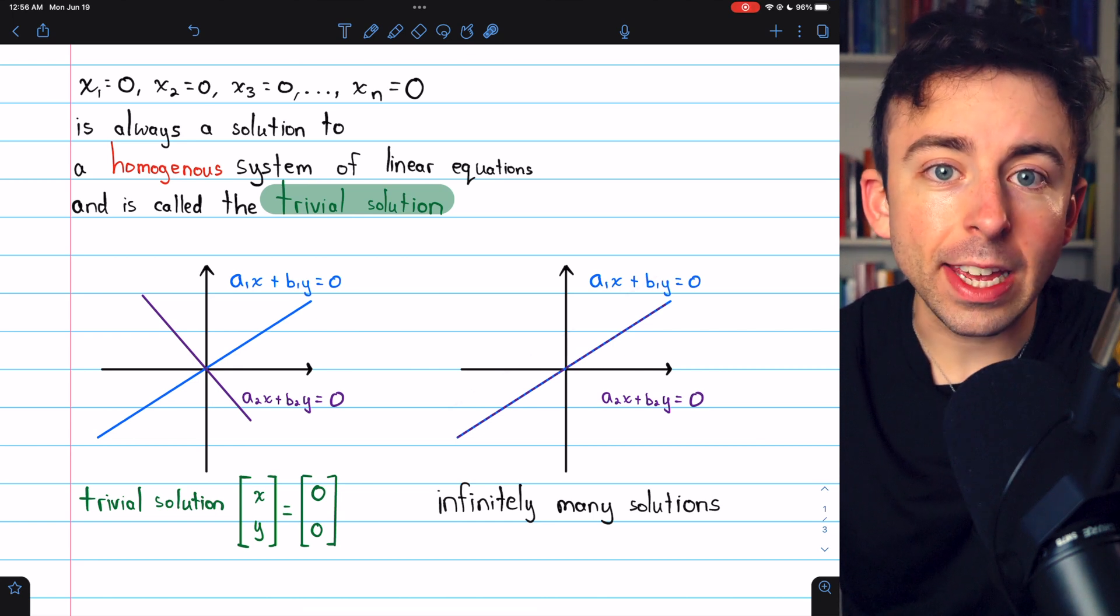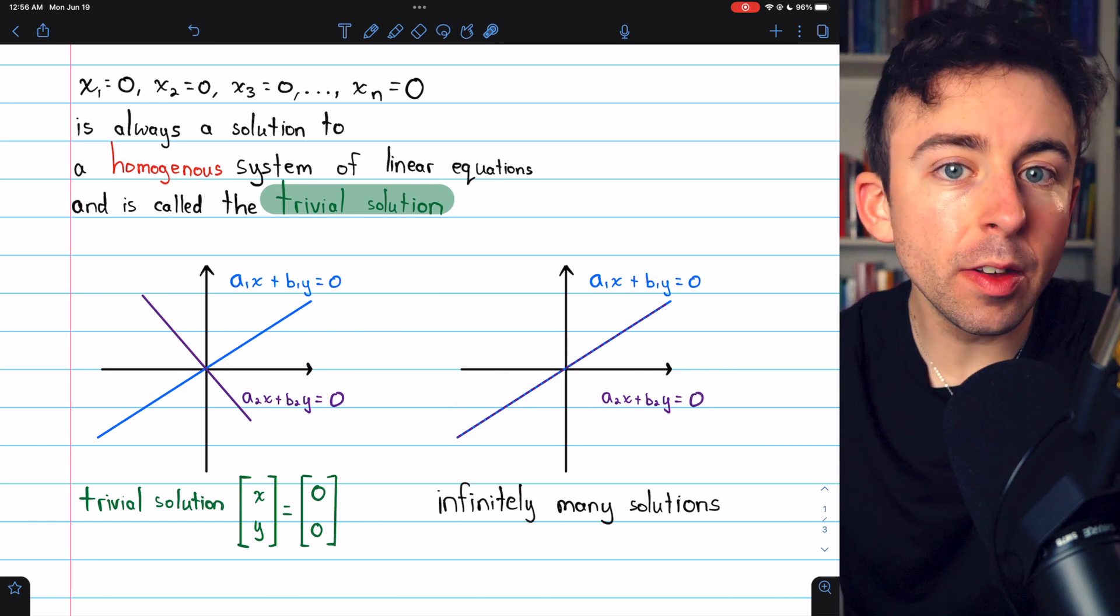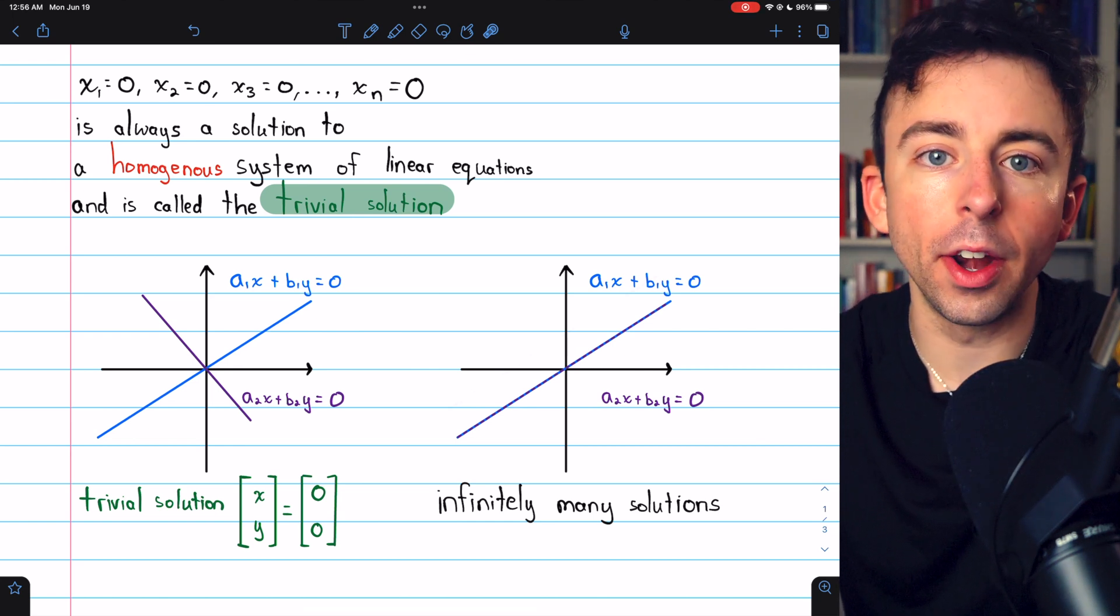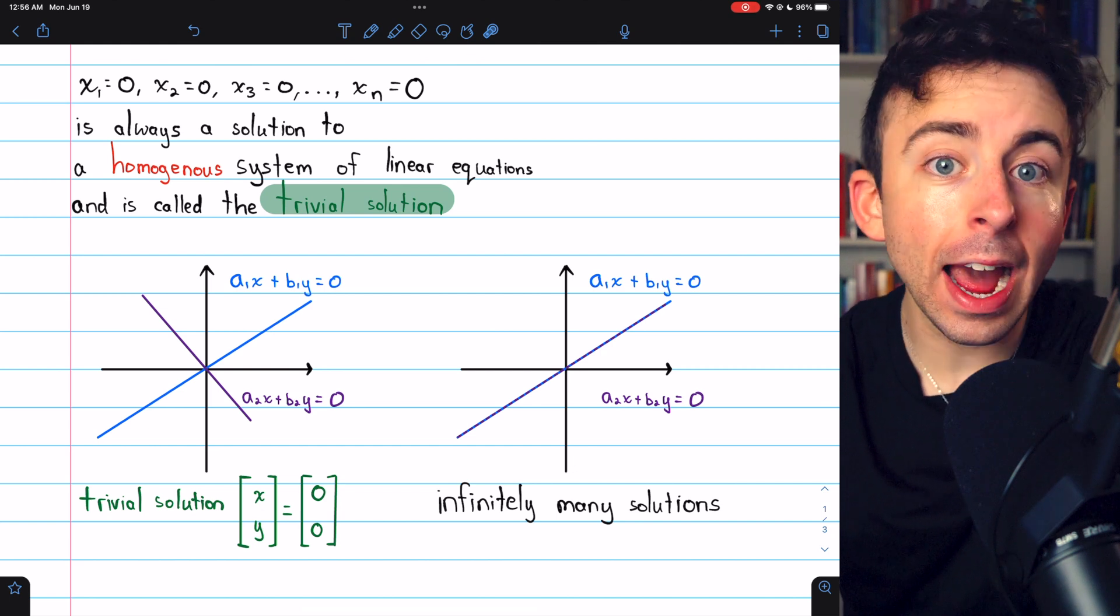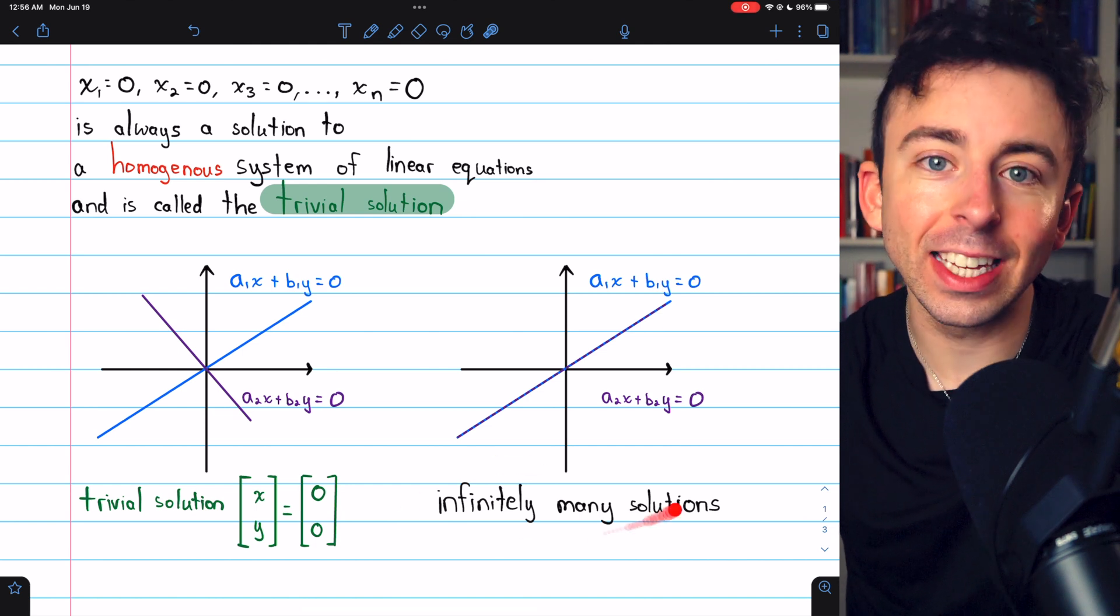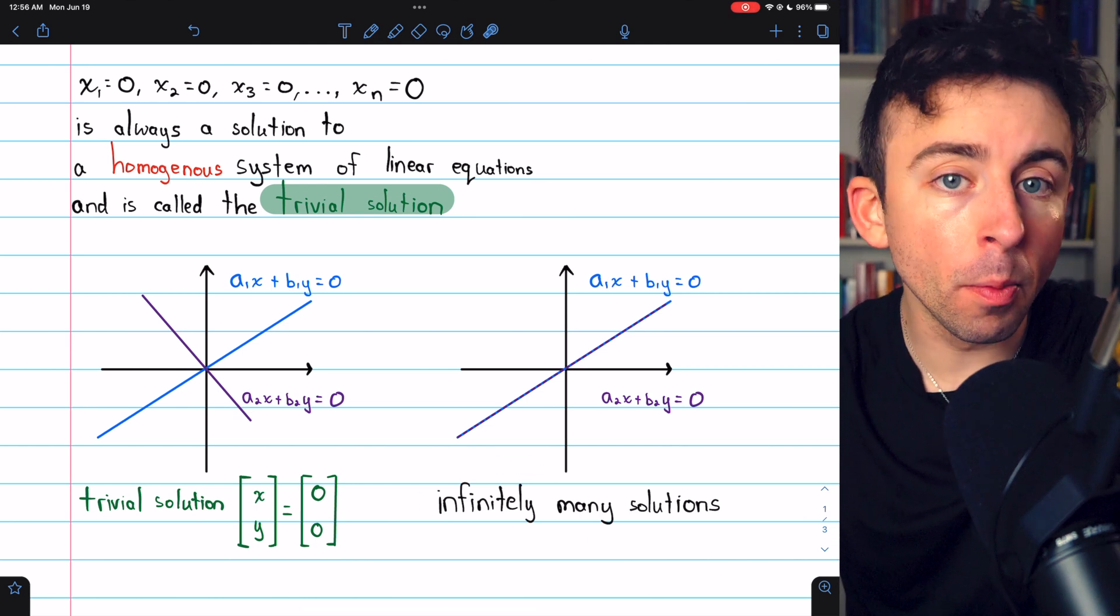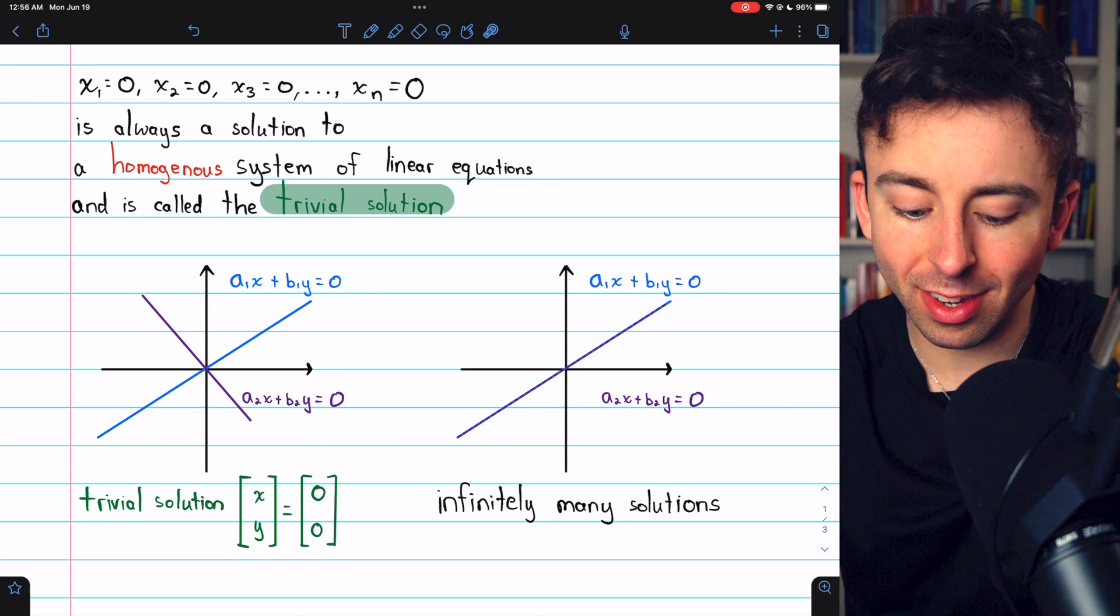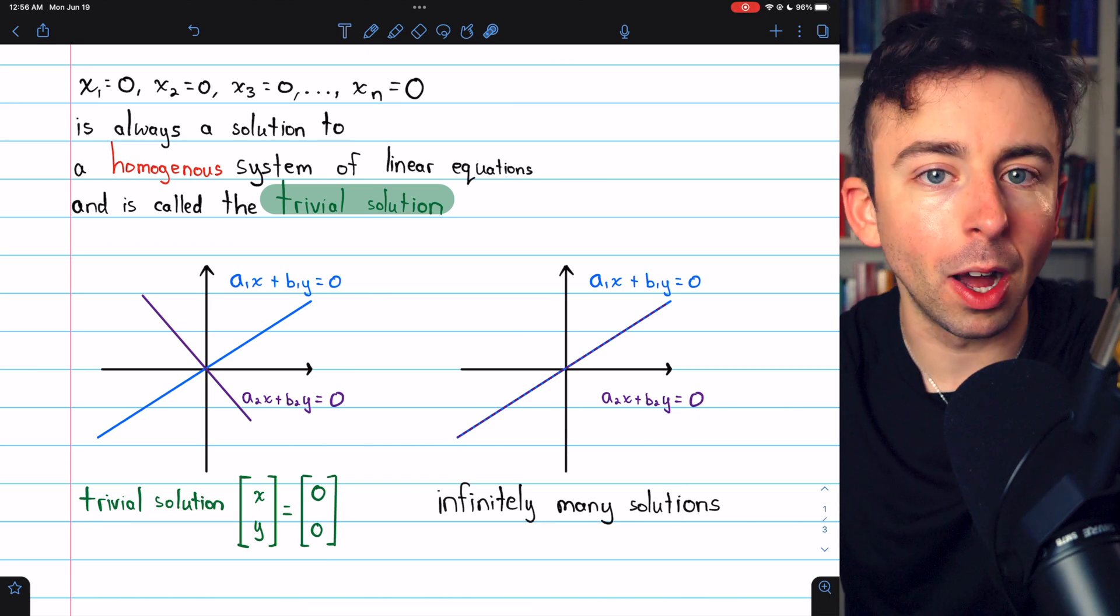And this is the case for any homogeneous linear system, even if it has more than two unknowns, they will always either have only the trivial solution or infinitely many solutions. For a homogeneous linear system of equations, these are the only two possibilities.